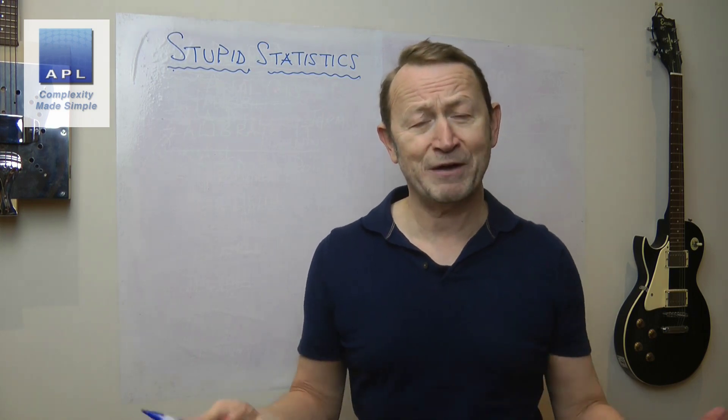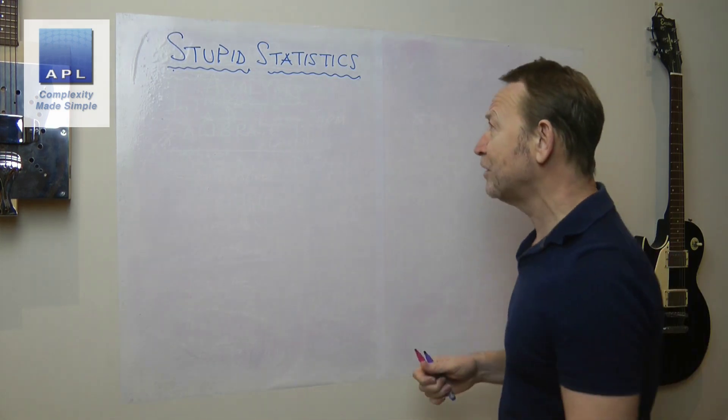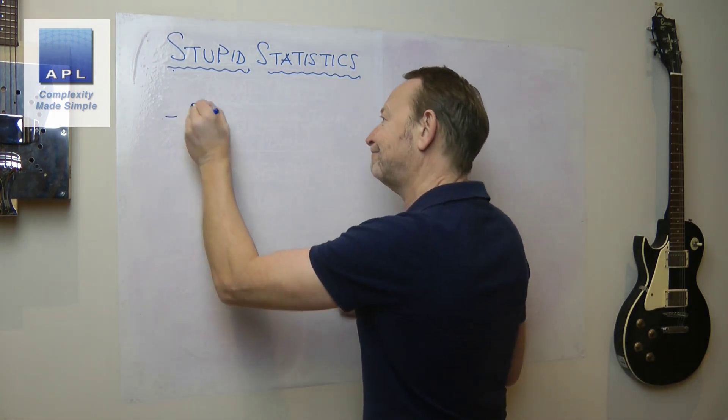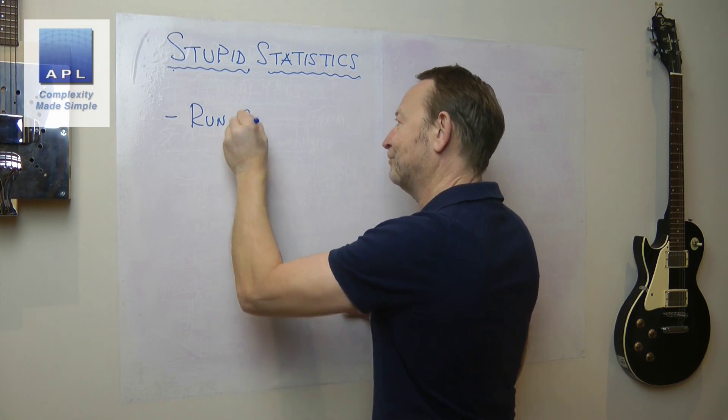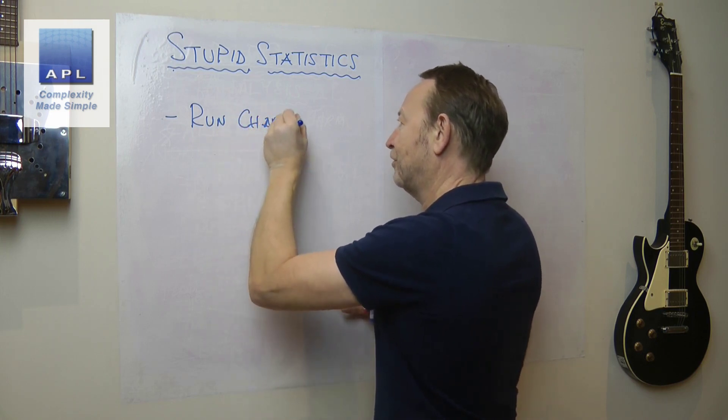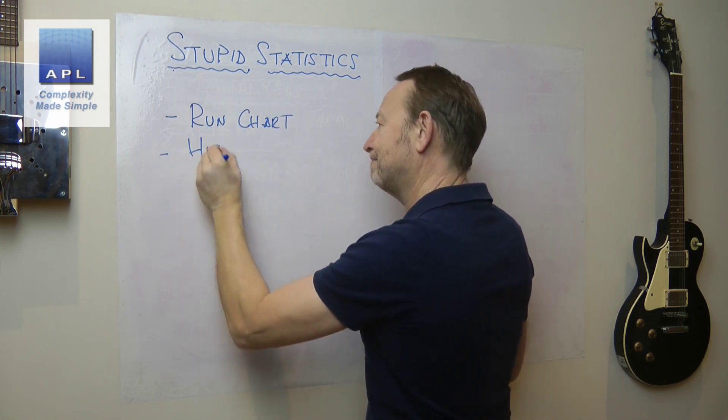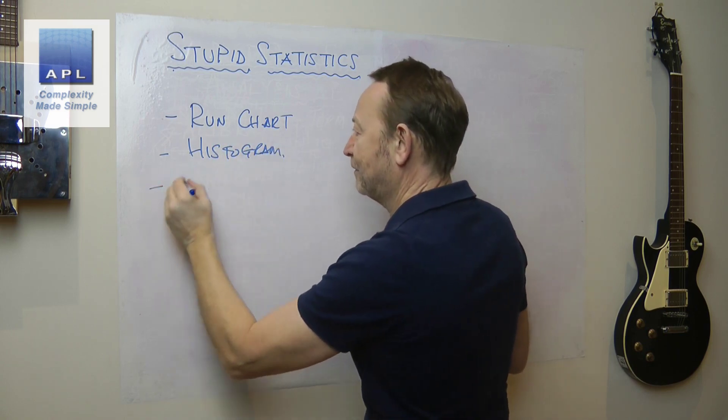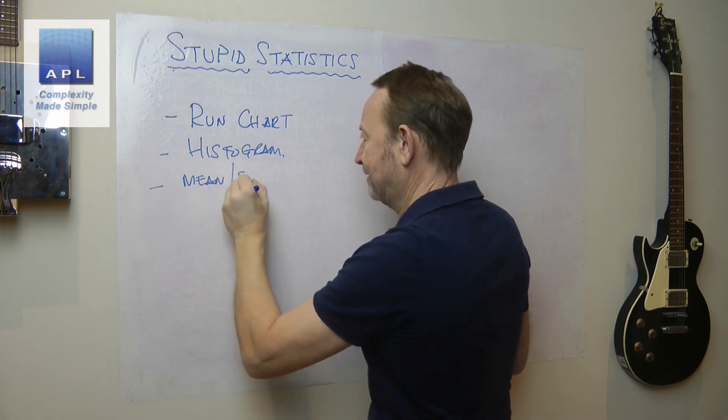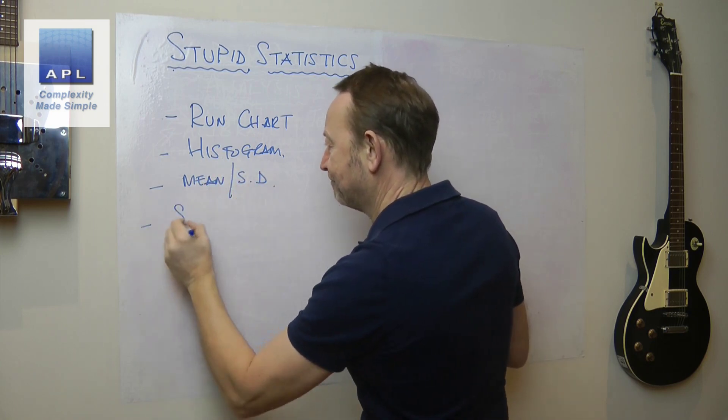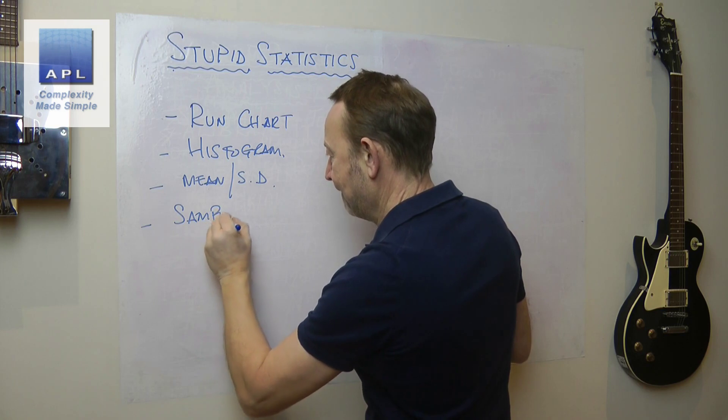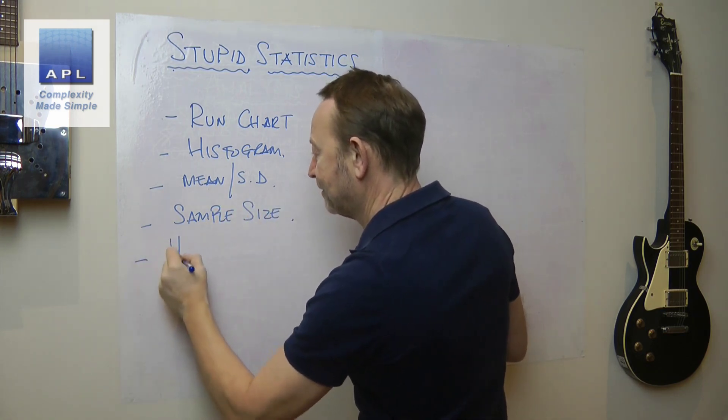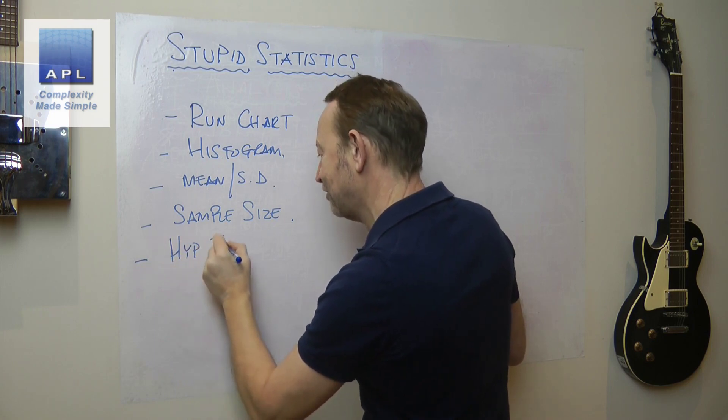So stupid statistics—and by the way, this was a Six Sigma Master Black Belt was asking this—who cares about kurtosis, my God? So statistics that are valuable: simple, simple, simple things. Run chart, histogram, mean, standard deviation, sample size, simple hypothesis tests.